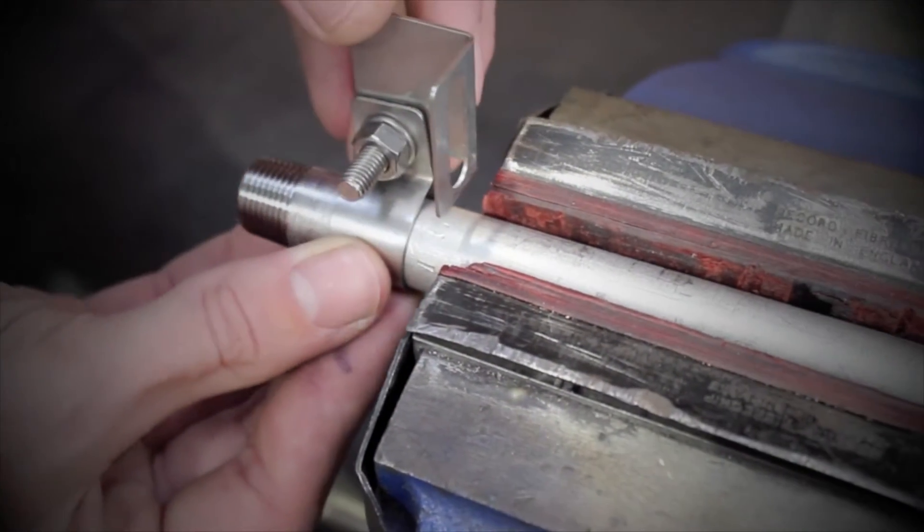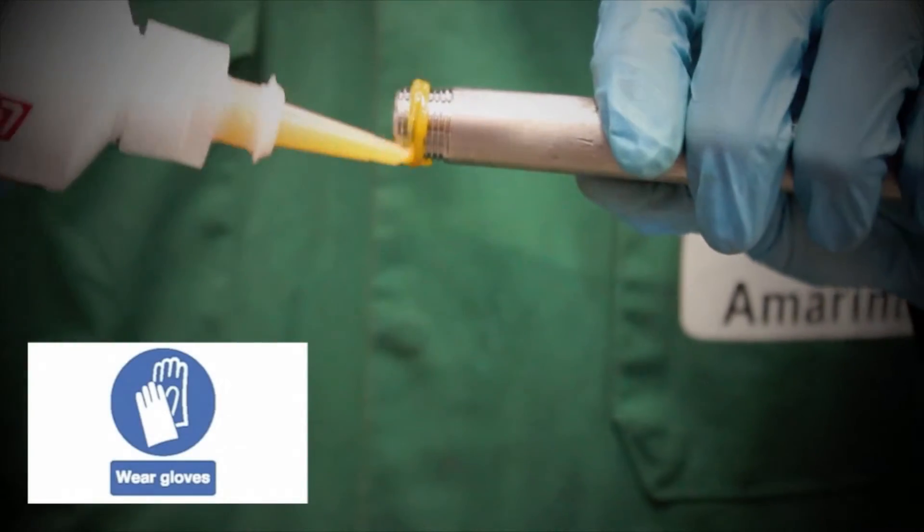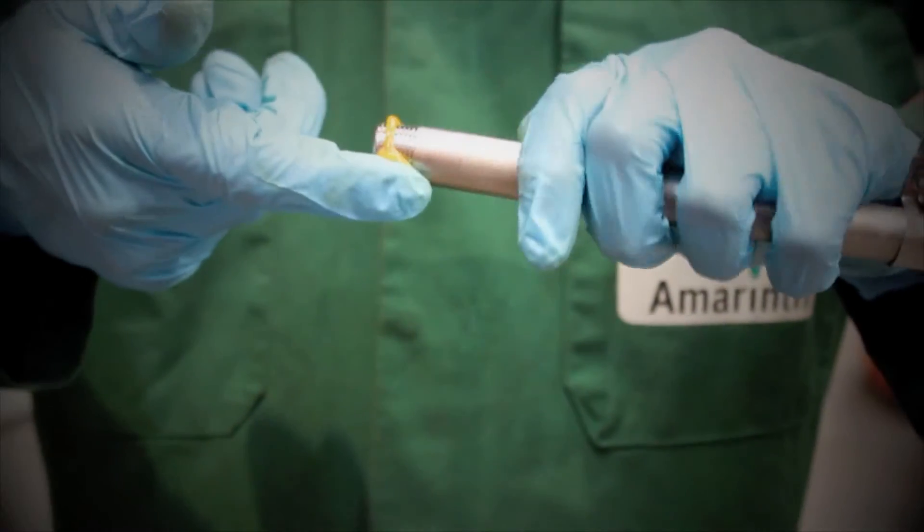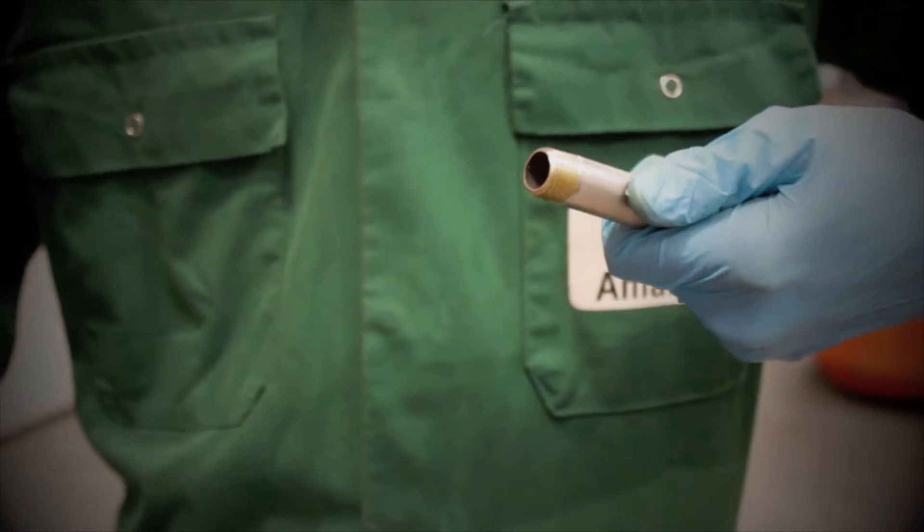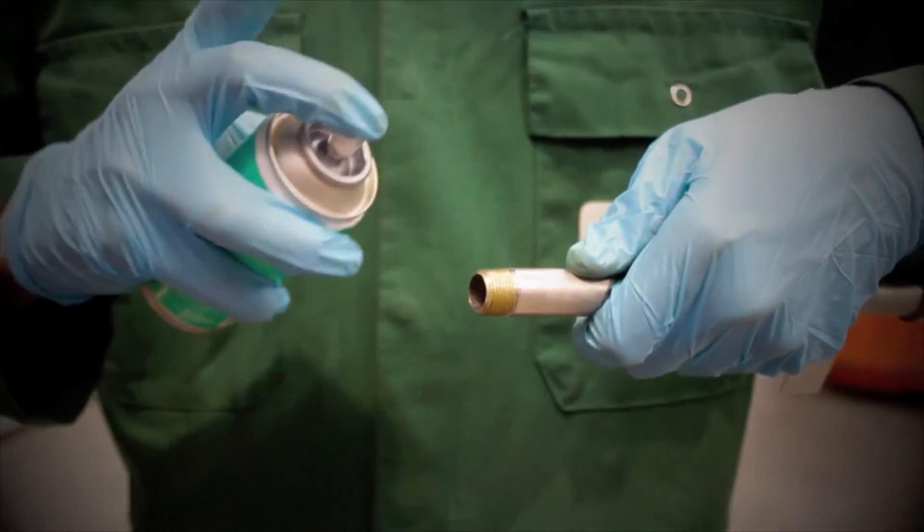Slide the retaining bracket onto the feed pipe assembly. Now apply sealant to the thread, using your finger to spread evenly. Once again in a well-vented area, spray the activator to set the sealant.